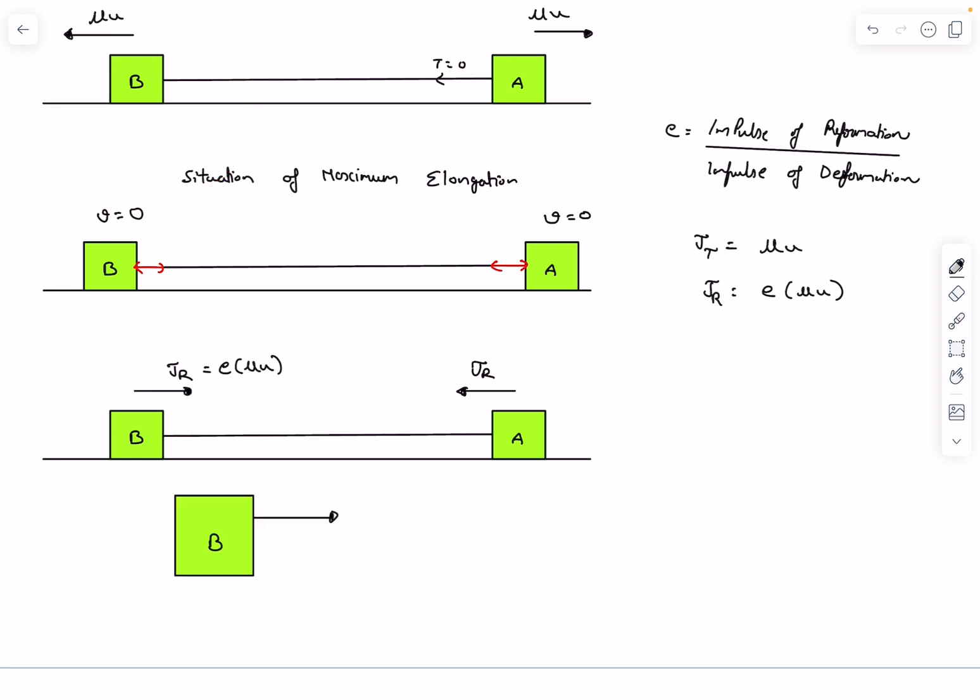So in block b, the total impulse, called j total, that acts on block b is going to be the change in momentum, which is e mu u minus of minus mu u, which is going to be mu u times (e + 1). So this is the total impulse that is acting on block b.